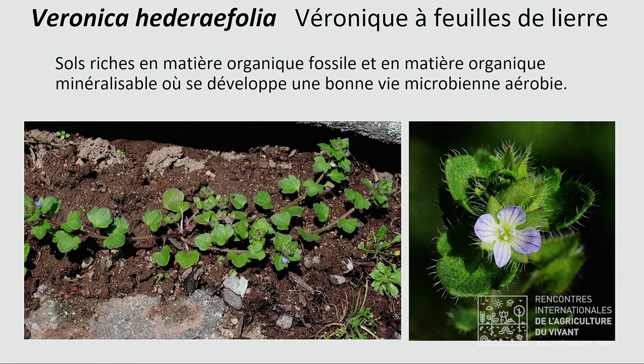En culture, un des meilleurs moyens de repérer la quantité et la qualité de vos matières organiques, c'est le genre Veronica — les véroniques. Avec deux véroniques principales : la véronique à feuilles de lierre, qui nous indique qu'il y a des stocks de carbone, et la véronique de Perse, qui indique plutôt des sols riches en azote. On peut donc évaluer le rapport C/N de la matière organique simplement par rapport à ces deux véroniques. Elles indiquent aussi un bon développement des micro-organismes aérobies — ce sont vraiment les sols qui fonctionnent très bien. D'autres véroniques, par contre, poussent dans des sols qui ne fonctionnent plus du tout.